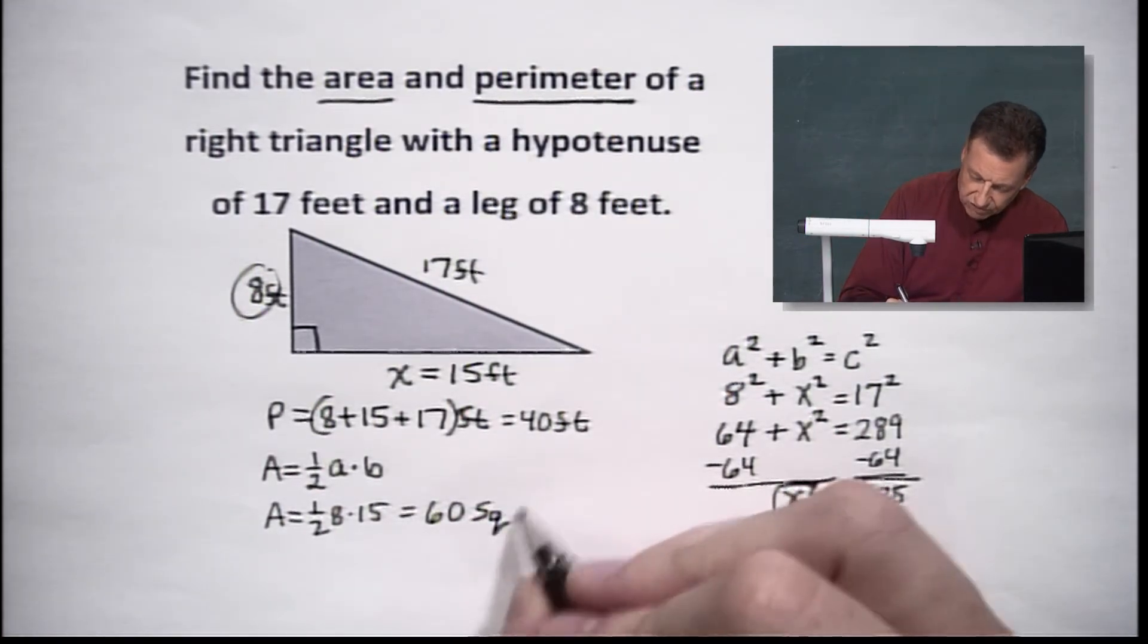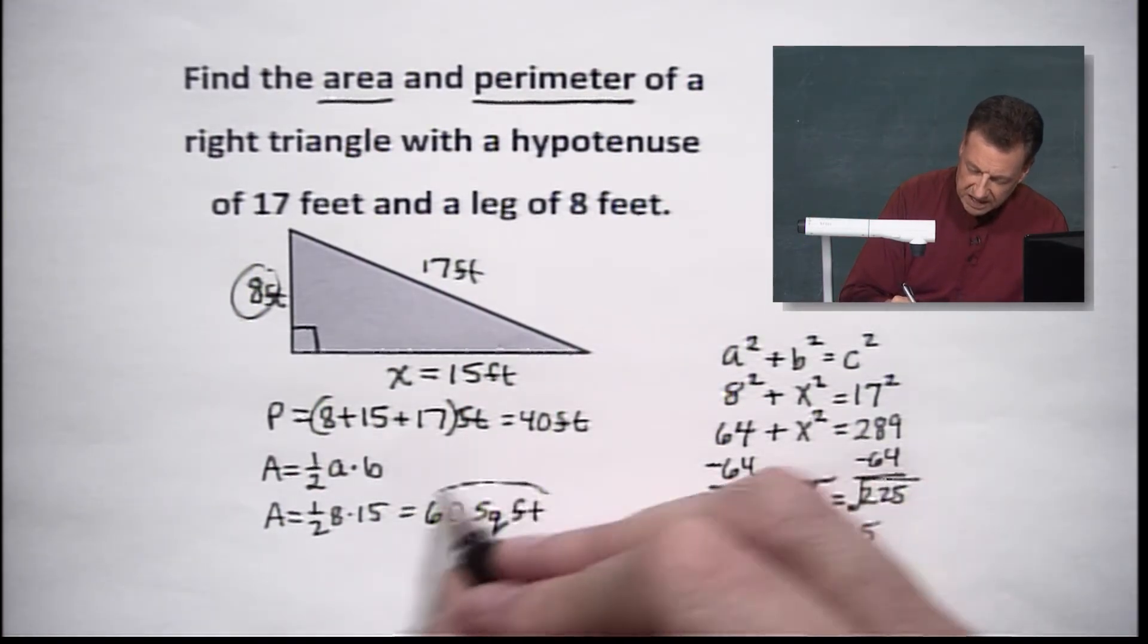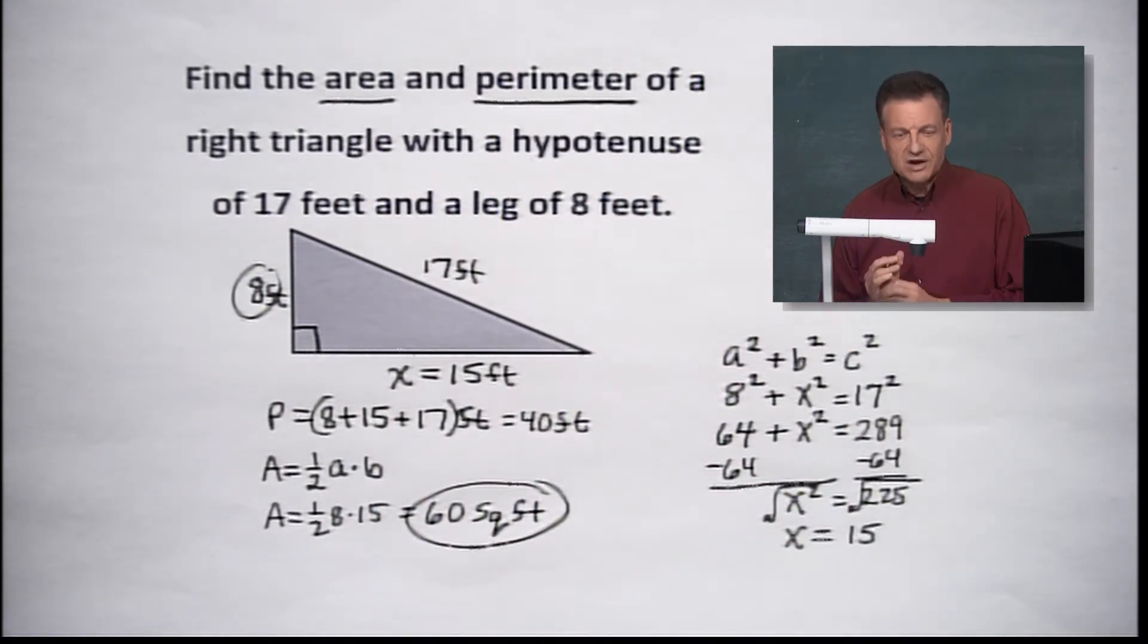But don't write feet. They're going to be square feet, all right, because you're taking feet times feet, which gives you feet squared. So in this case, that's our story on this one. That's our final tally there. We do come up with square feet for the area. We have feet for the perimeter.